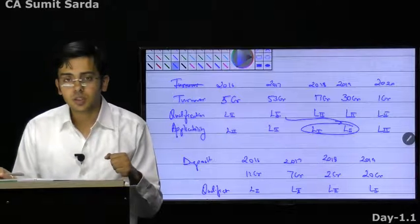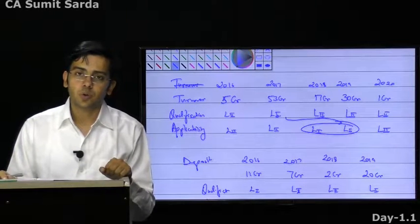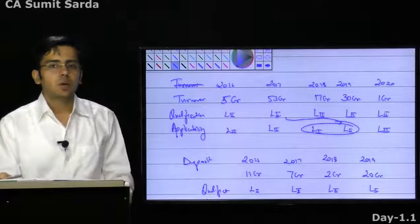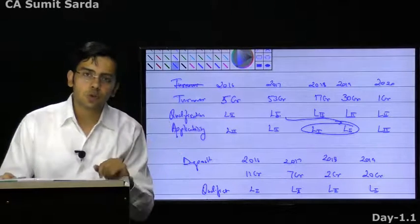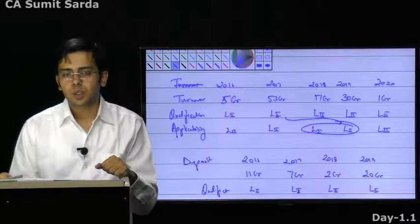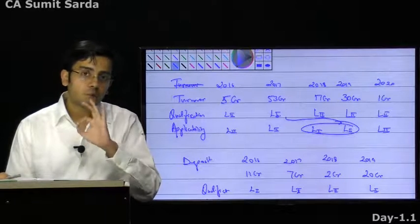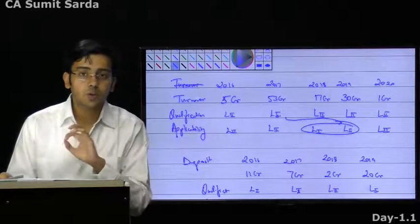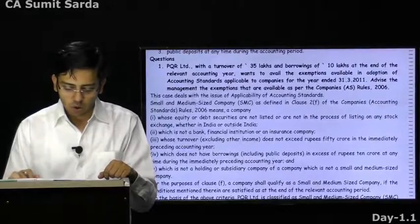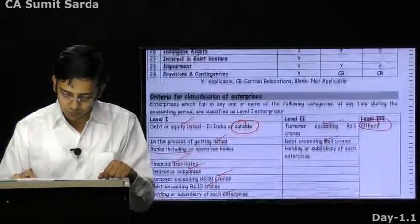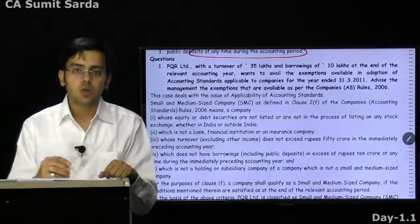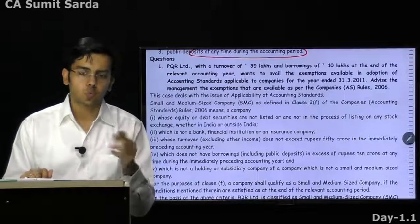For deposits, if the deposit was 11 crore in 2016, 7 crore in 2017, 2 crore in 2018, 20 crore in 2019 — qualification is Level 1, Level 2, Level 2, Level 1. Applicability: Level 1 in the first year itself, at least one year we continue, Level 1 in 2017, Level 2 in 2018, Level 1 again in 2019. During the year, if your deposits exceed the minimum limit given to you, you are required to follow Level 1. If deposits were more than 10 crore at any time during the period, you are a Level 1 enterprise.